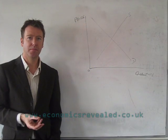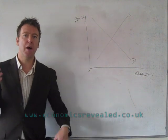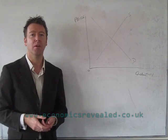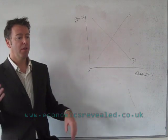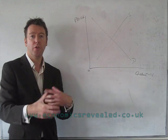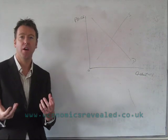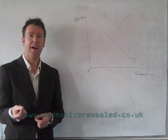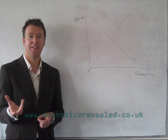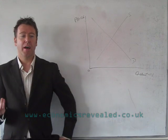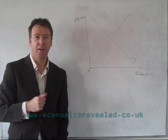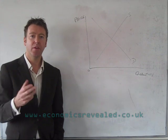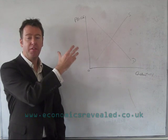Shifts in the supply curve. For this you need to imagine yourself as a supplier — if you imagine yourself as a farmer, that tends to be quite a simple example. Imagine a situation where the raw materials for the crop you're producing go up. So let's say you need fertiliser for your carrots. If the price of fertiliser goes up, that's going to have an impact on your ability to supply carrots at certain price levels. Equally, if the price of labour goes up or if there's an improvement in technology, that's going to have an impact. All of these things can cause shifts in the supply curve.